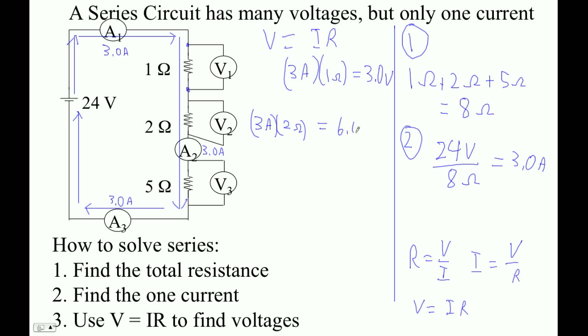And then this guy here is 3 amps times 5 ohms. So there's a bigger voltage drop across a bigger resistor. That makes sense. Bigger constrictions in a pipe cause a bigger change in pressure. 3 times 5 is 15.